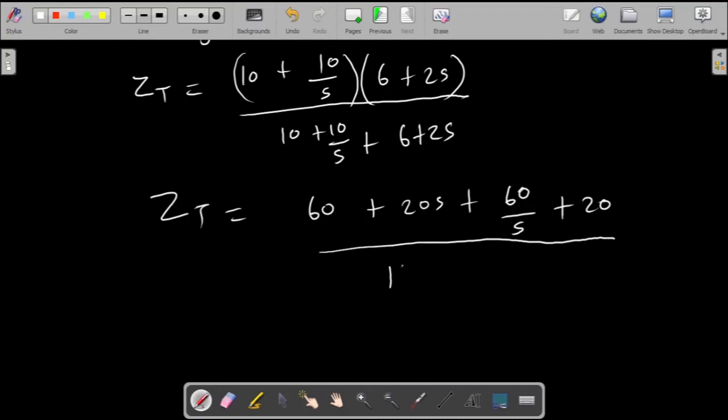Let's try to see what we can add. We can add 10 and 6, so 10 and 6 would be 16 plus 10 over s plus 2s. Now let's multiply the top and the bottom by s.